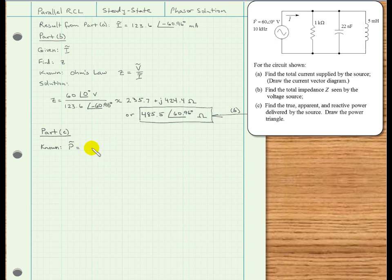Now we know that power in phasor form can be solved for using P equals I squared times Z. And we have these values: Z we just solved for in part b, and we also have the current from part a, so we can use those directly here in solving for the power in part c.